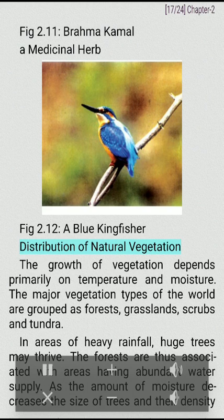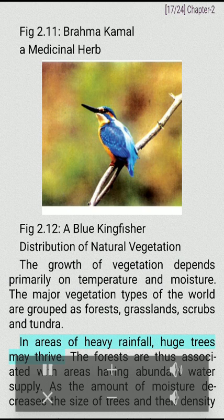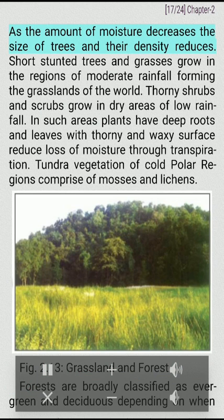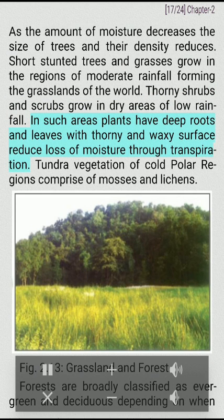Distribution of natural vegetation: The growth of vegetation depends on temperature and moisture. The major vegetation types of the world are grouped as forests, grasslands, scrubs and tundra. In areas of heavy rainfall, huge trees may thrive; forests are thus associated with areas having abundant water supply. As the amount of moisture decreases, the size of trees and their density reduces. Short stunted trees and grasses grow in regions of moderate rainfall, forming the grasslands of the world. Thorny shrubs and scrubs grow in dry areas of low rainfall. In such areas, plants have deep roots and leaves with thorny and waxy surfaces to reduce loss of moisture through transpiration. Tundra vegetation of cold polar regions comprises mosses and lichens.